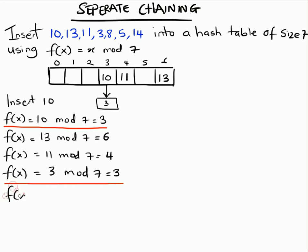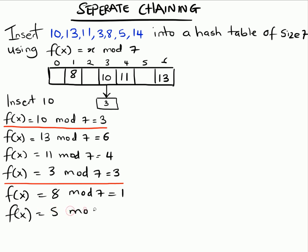For the next one, we insert 8 — 8 mod 7 is 1, no collision, so we just insert 8. Next, 5 mod 7 is 5, no problem, so we insert 5. And the last one, 14 mod 7 is 0.